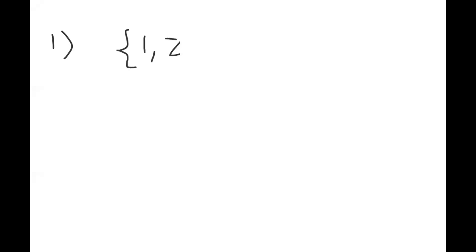All right, can everyone see the whiteboard? Okay, cool. So let's just start with the first one. A permutation of a finite set S is a one-to-one function from S to S, and a permutation of the set {1, 2, 3, 4, 5} is called a W permutation.